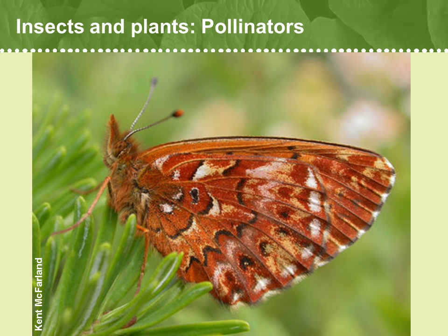Let's start small, with insects. Most of us know that many kinds of insects pollinate plants. Worldwide, about 200,000 species of insects are known to be active pollinators. And the majority of angiosperms, or flowering plants, rely on insects to move their pollen around.